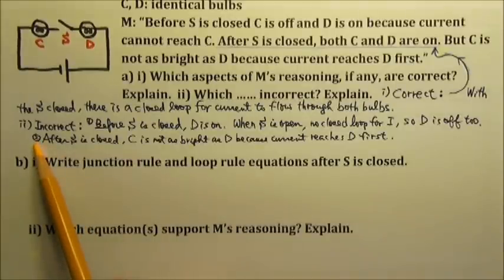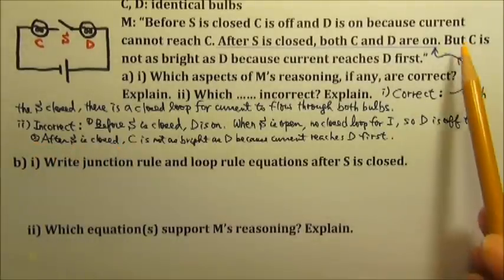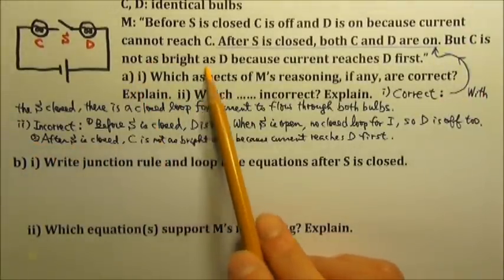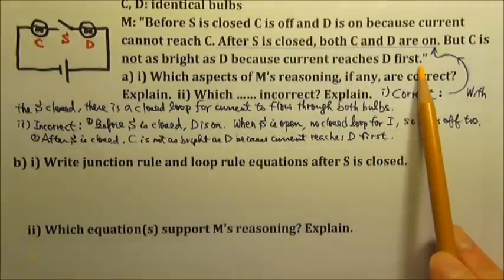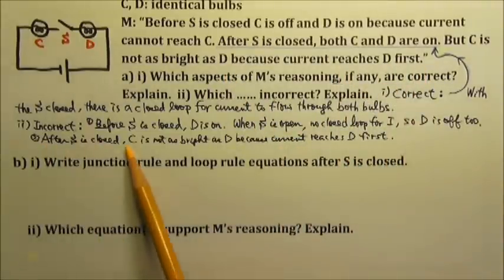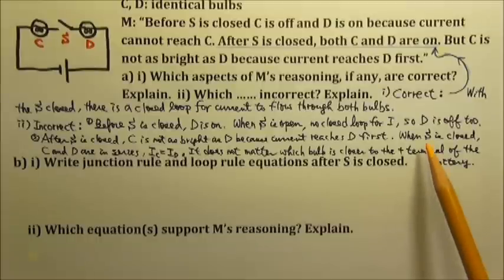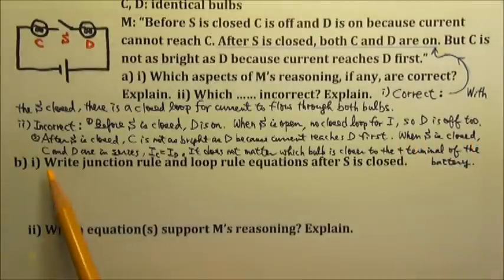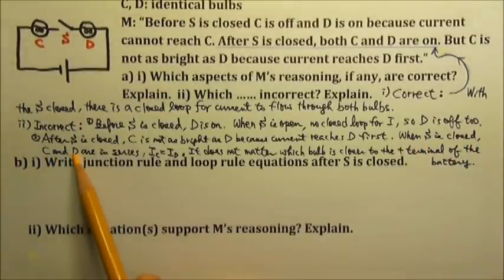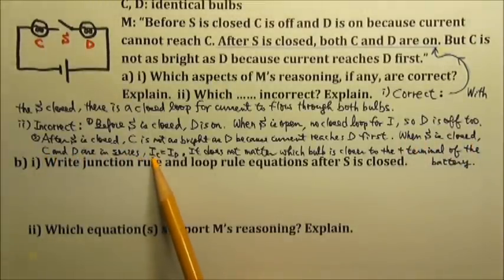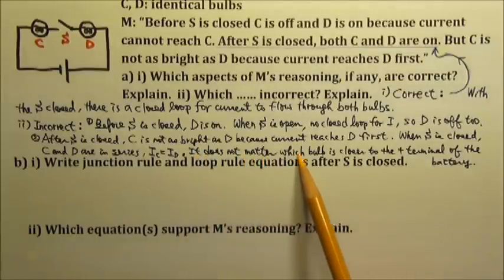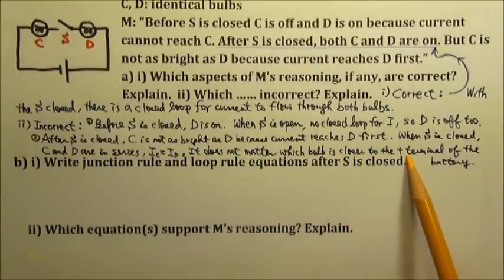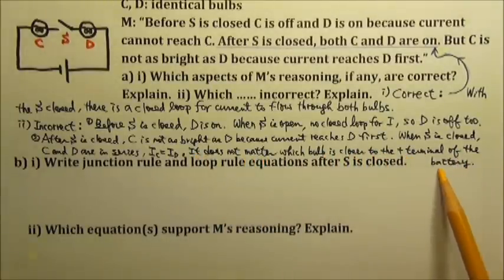Another incorrect aspect is: after the switch is closed, bulb C is not as bright as bulb D because current reaches D first. When the switch is closed, C and D are in series. They get the same current — it does not matter which bulb is closer to the positive terminal of the battery.